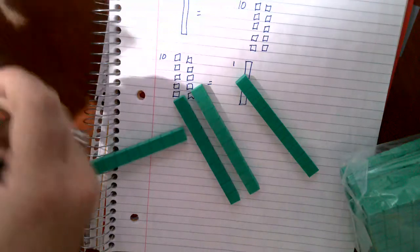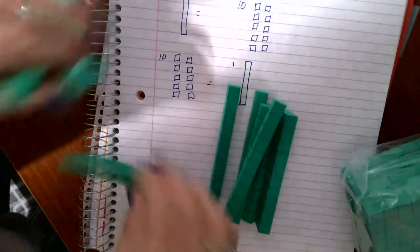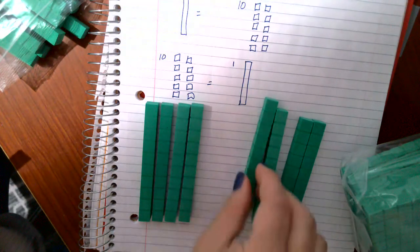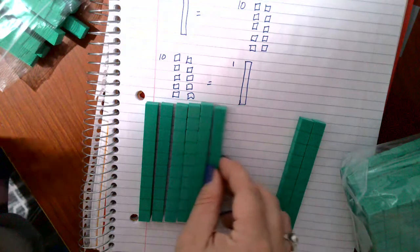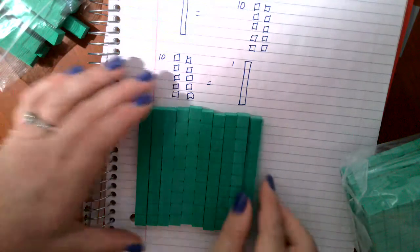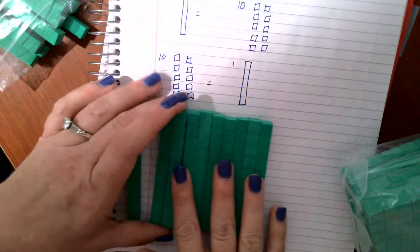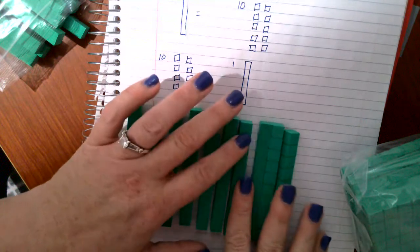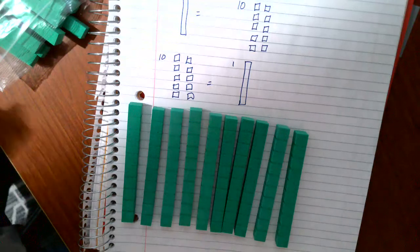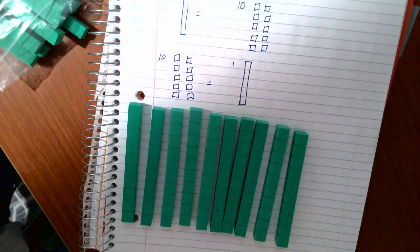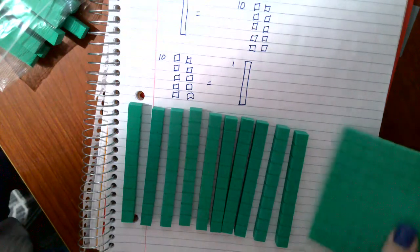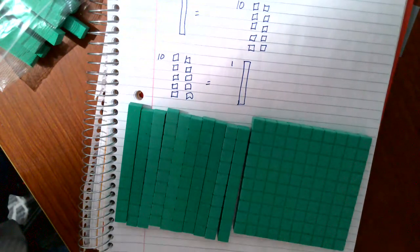So, now, what if we have ten tens? So, let's look at ten tens. Ten, twenty, thirty, forty, fifty, sixty, that's six tens, seventy, eighty, ninety, one hundred. So, if we have ten tens, ten tens equals one hundred. So, this is what a one hundred looks like. Ten tens equals one hundred.